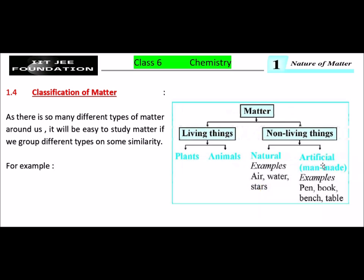Artificial means man-made things, they are all man-made, made by the man. For example, pen, book, bench, table and etcetera, even mobile also, TV also, anything which is made by man, they are all man-made things.